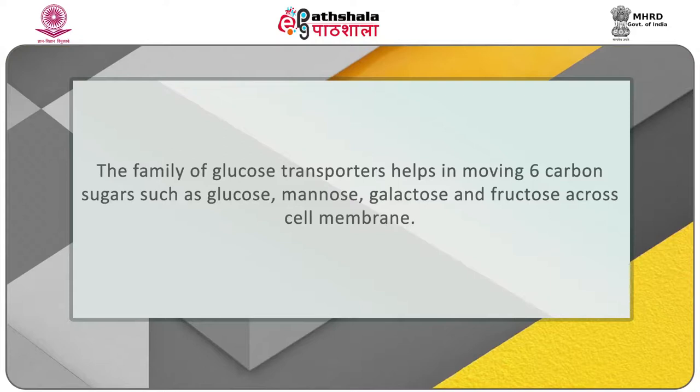This is a transport system which uses potential energy stored to move glucose against the concentration gradient. The family of glucose transporters helps in moving 6-carbon sugars such as glucose, mannose, galactose and fructose across cell membranes. Since they do not transport any unnaturally occurring glucose molecules, they are highly specific for only naturally occurring 6-carbon sugars or hexose sugars. The first isolation of GLUT was in 1980. The most important ones are GLUT 1 to 5, where GLUT 1 is formed in most cells.